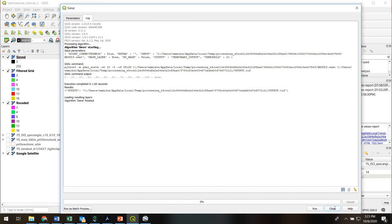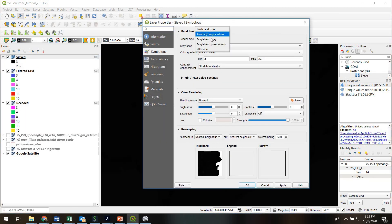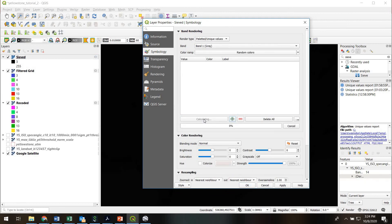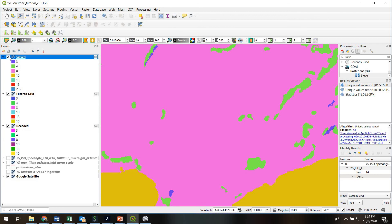That ran really quickly and here is our sieved raster. As always it kind of does this funky display so we'll go to properties, palletted, classify, get all those values up there, hit okay. So there it is.